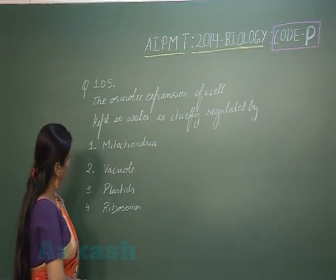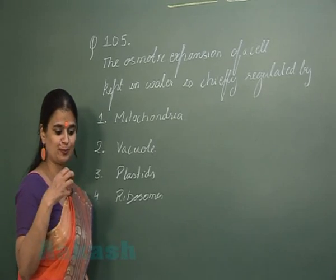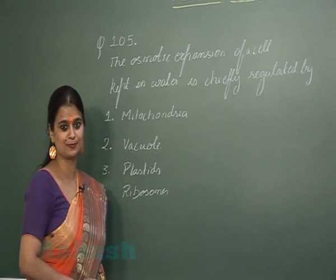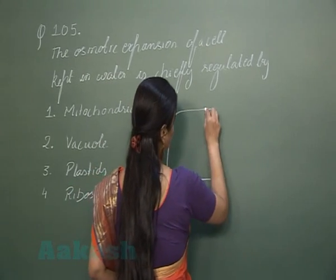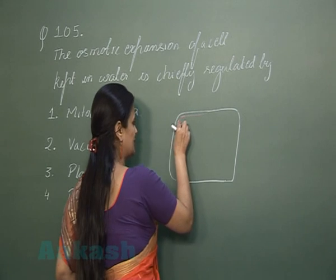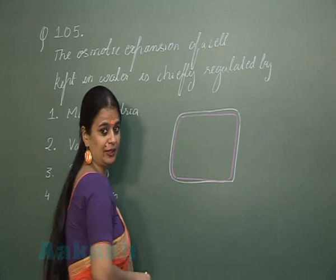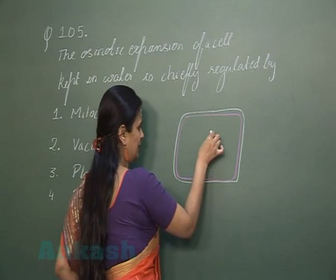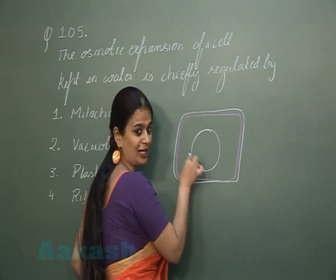So now, which of the following components present in the cell is responsible for the osmotic expansion of the cell? Now let's see, this is a plant cell. This is representing the cell wall. Below the cell wall, this layer which is present is the plasma membrane, and in the cell, the structure which I am showing here is the vacuole.